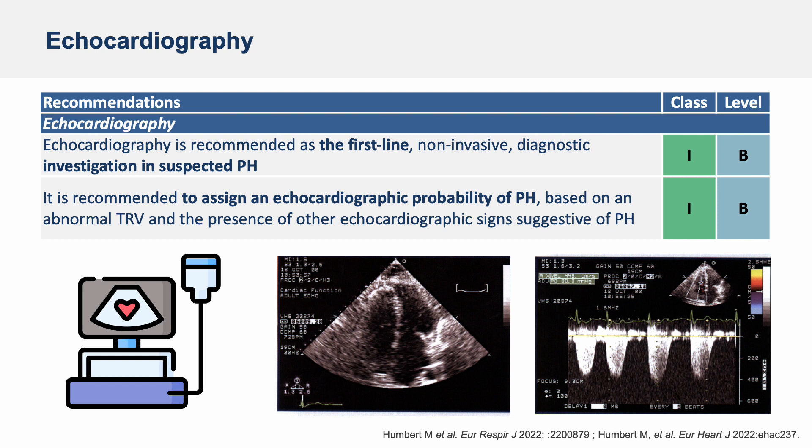Based on echocardiography, we will assign a probability of pulmonary hypertension, which will be either low, intermediate, or high. In case of intermediate or high probability of pulmonary hypertension, the patient will be referred to a PH center for further assessments, including right heart catheterization.